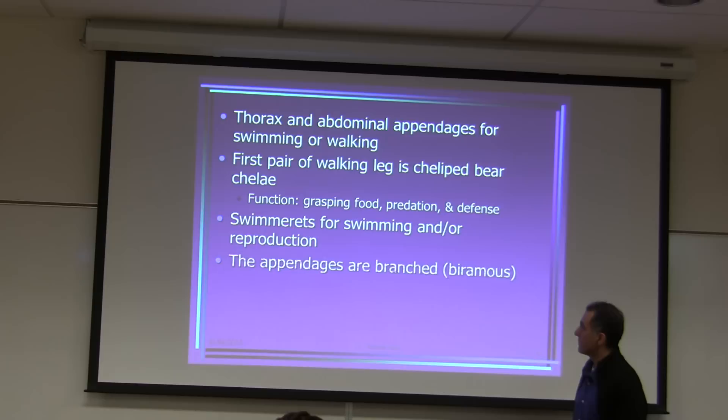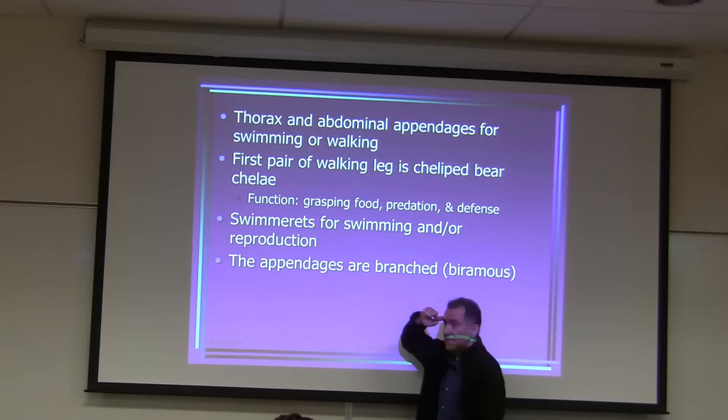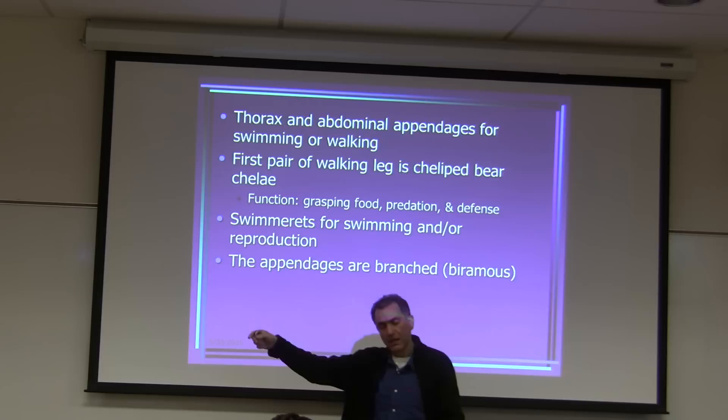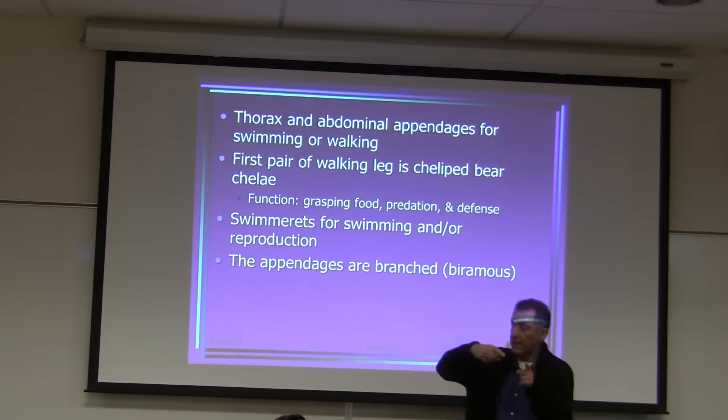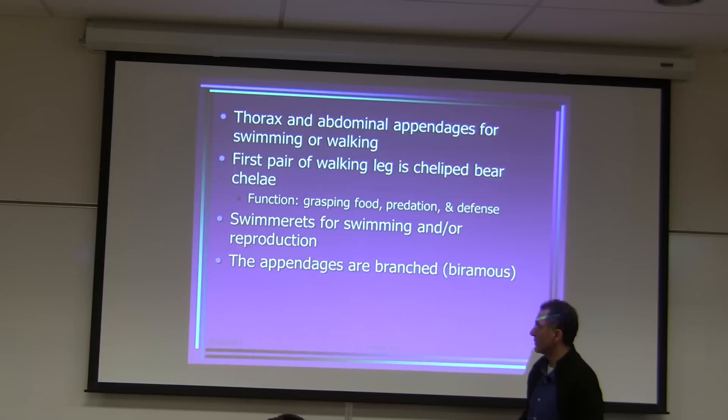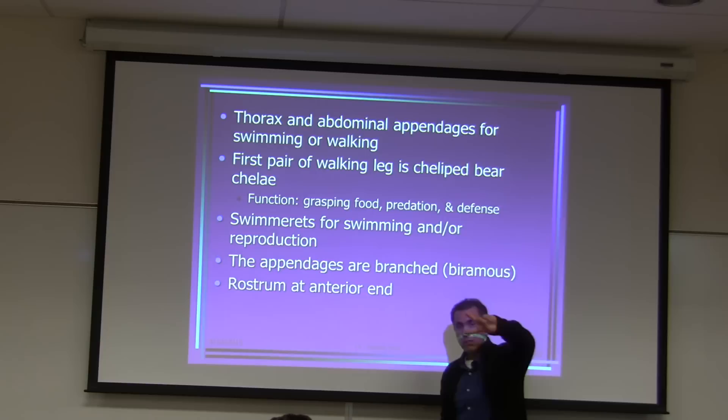The very first pair of swimmerets is used for reproduction. These animals are dioecious, so the first pair of swimmerets of the male looks different than the female's, and the male transfers sperm from swimmerets to the female. Appendages are branched by ramus.